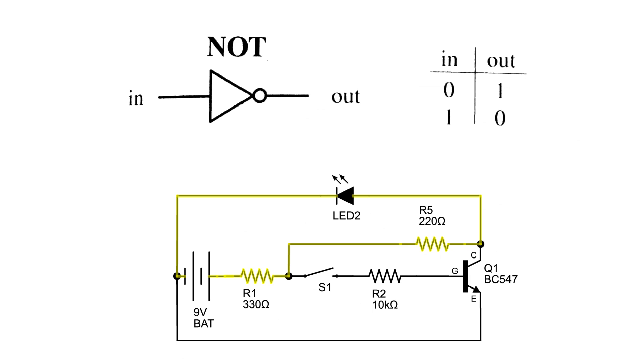Lastly, the NOT gate schematic is pretty straightforward. It only has one input switch, and like with NAND and NOR, the LED and extra resistor are connected to the collector of the transistor.